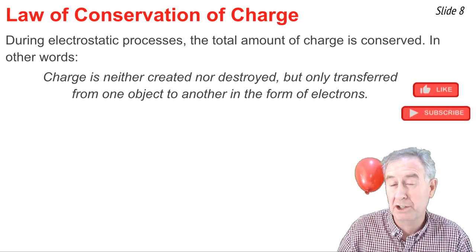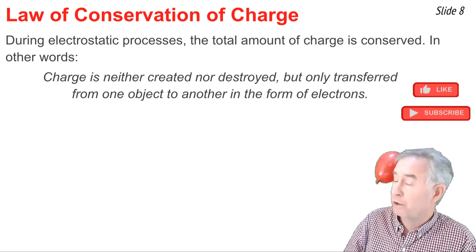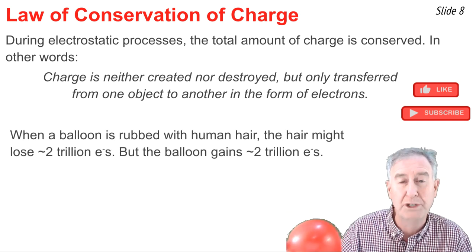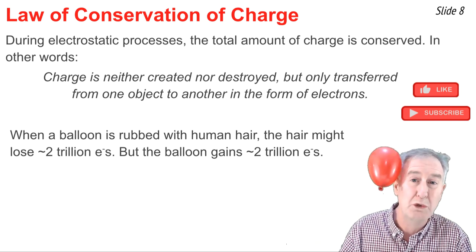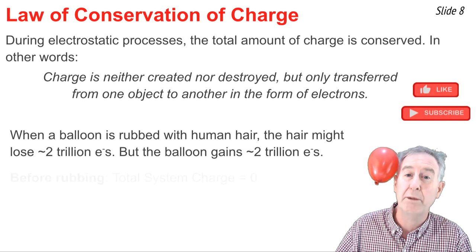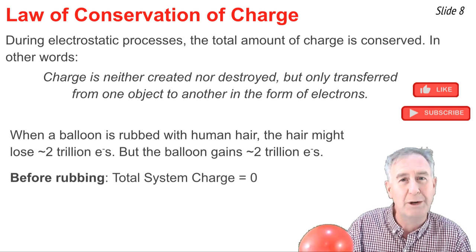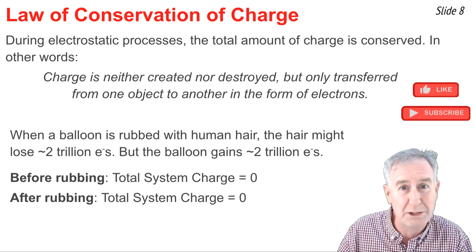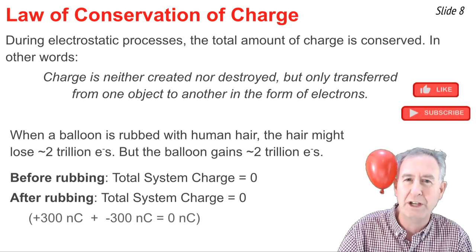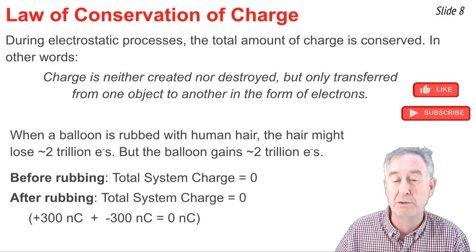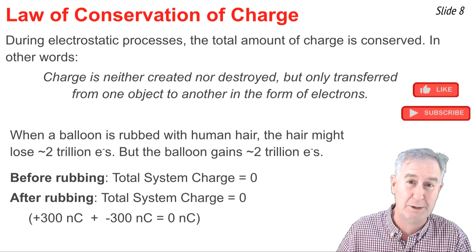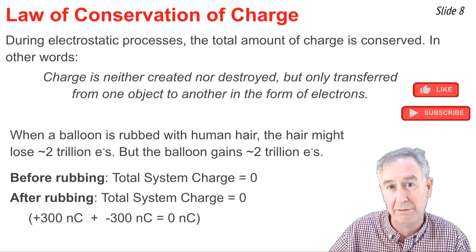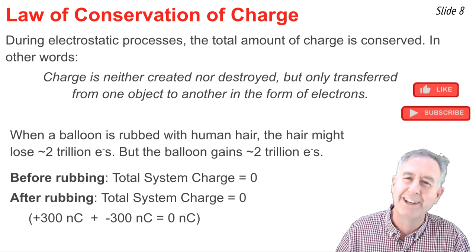During an electrostatic process, the total amount of charge is conserved. Charge is neither created nor destroyed, but only transferred from one object to the other in the form of electrons. If you were to take a vinyl balloon and give it several brisk rubs with some animal fur, you would end up transferring as many as 2 trillion electrons from the animal fur to the balloon. Before the rubbing began, the total system charge of the two objects together would have been zero since both start neutral. After rubbing, the human ear having lost 2 trillion electrons would have a charge of approximately positive 300 nanocoulombs, and the vinyl balloon would have a charge of negative 300 nanocoulombs. Positive 300 plus negative 300 adds up to zero nanocoulombs — charge is conserved during a triboelectric process.